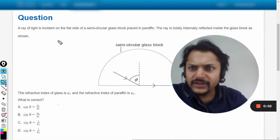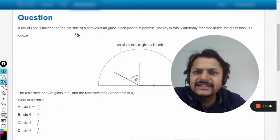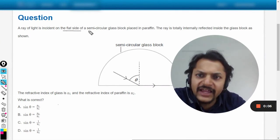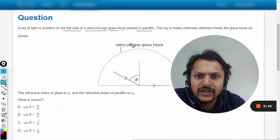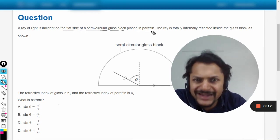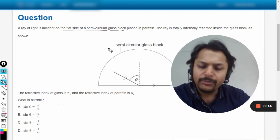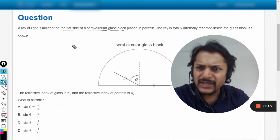Okay, here let us see what is there in this question. A ray of light is incident on the flat side of a semicircular glass block placed in paraffin. So there's a medium paraffin, a carbon compound that is here literally.